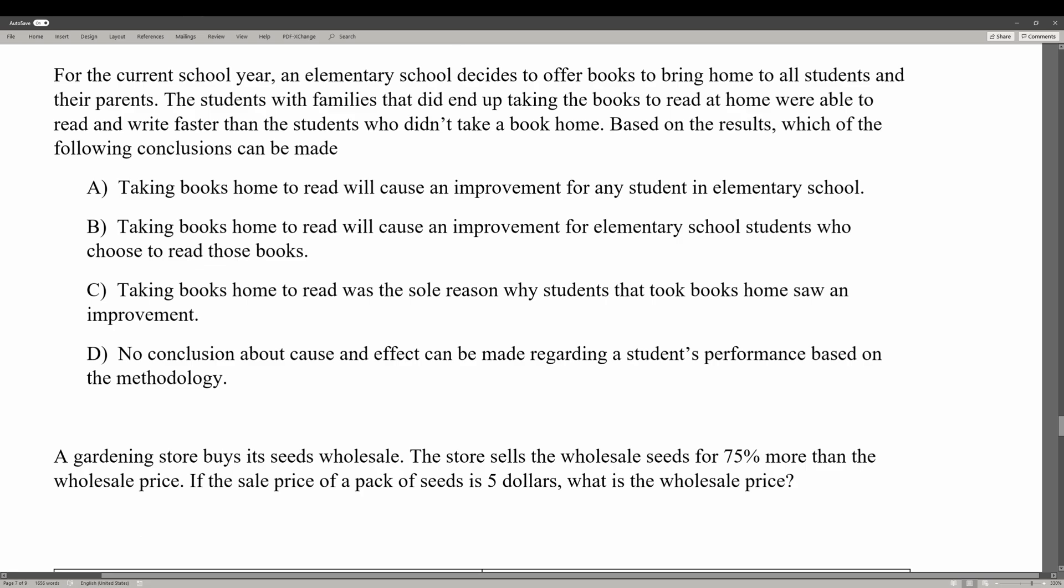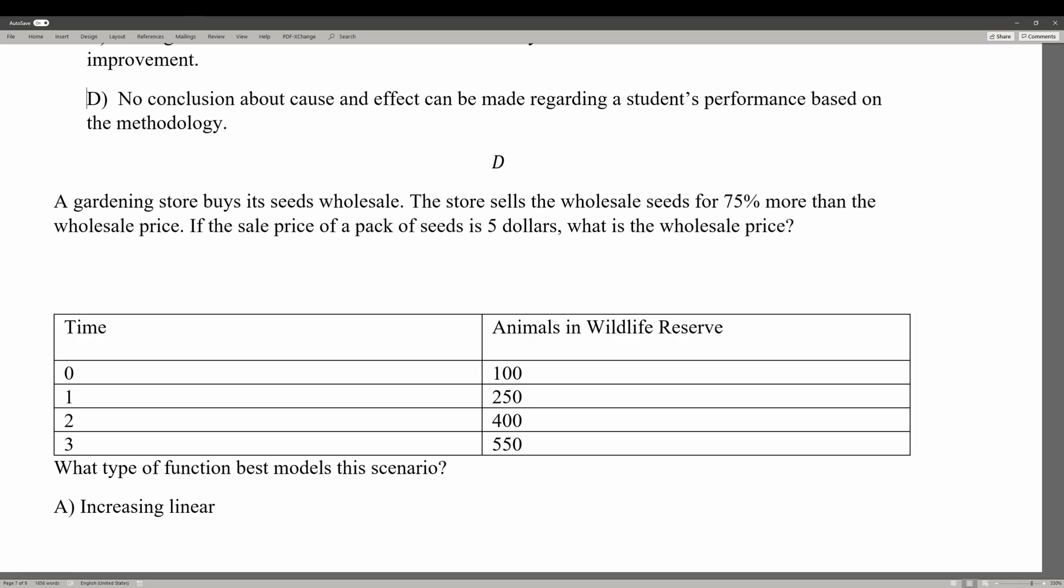For the current school year, an elementary school decides to offer books to bring home to all students and their parents. The students with families that did end up taking the books to read at home were able to read and write faster than the students who didn't take a book home. Based on the results, which conclusions can be made? Choice A says taking books home will cause improvement for any student in elementary school. This is incorrect because we didn't survey all students. Choice B and C are also wrong because we didn't have a control group to compare. There was no experiment and no random selection. In the end, no conclusion can be made because there was no random selection and it wasn't an experiment. The answer is D.